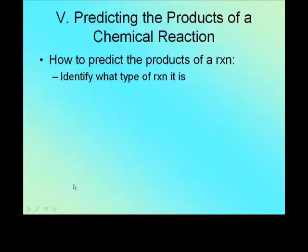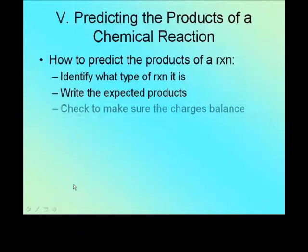First, figure out what type of reaction it is. If you can say, oh it's composition, well then you know you should only have one product. Or if it's combustion and it's a hydrocarbon, you know that your products have to be CO₂ and H₂O. So figure out what type of reaction it is first. Second, write down what you think should be the products. Third, balance the charges — meaning inside the compound. For example, KBr: potassium is plus one, bromine is minus one, just like we did in the other example.